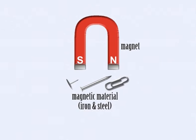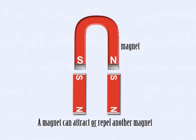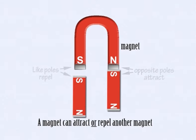The difference between a magnet and magnetic material is that a magnet will always attract magnetic material, but a magnet will attract or repel another magnet, depending on whether opposite or like poles of the magnet are facing each other.